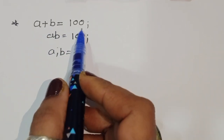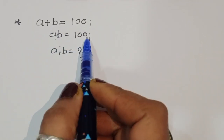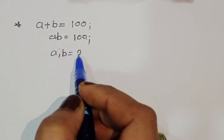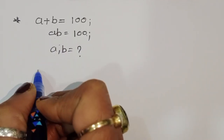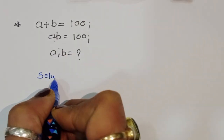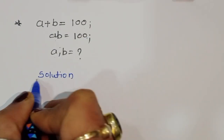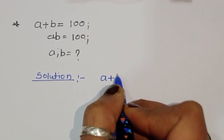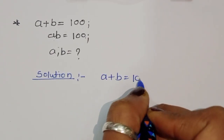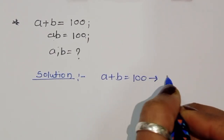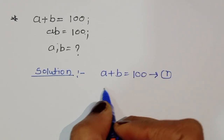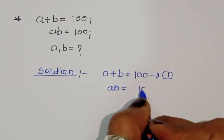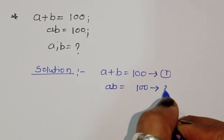Given a plus b is equal to 100 and ab is equal to 100, we have to find out the value of a and b. This is equation number 1 and equation number 2.